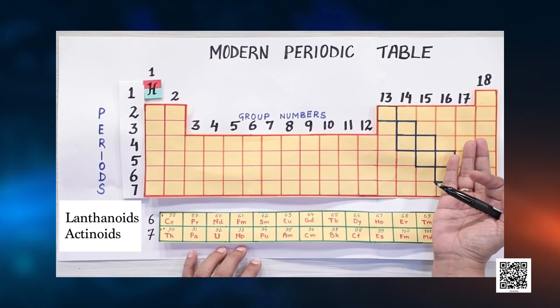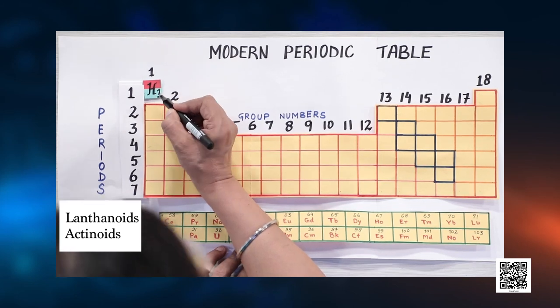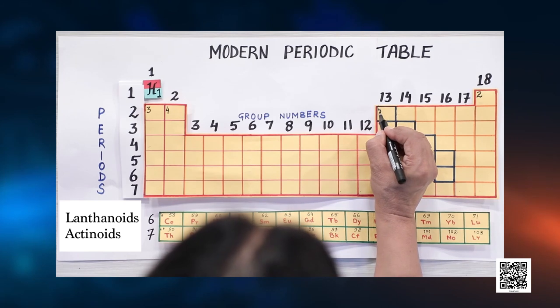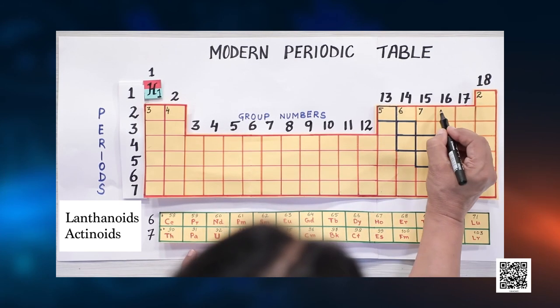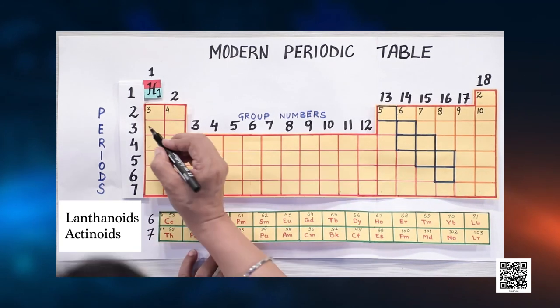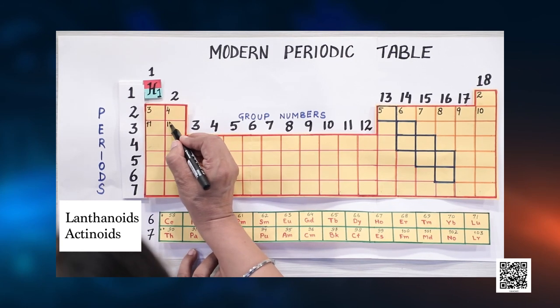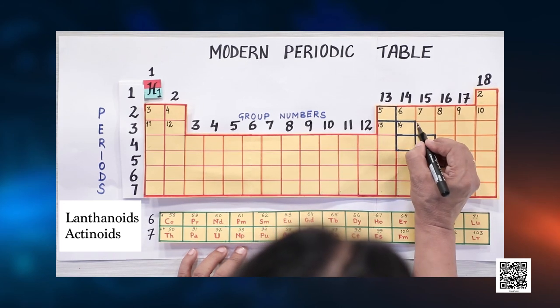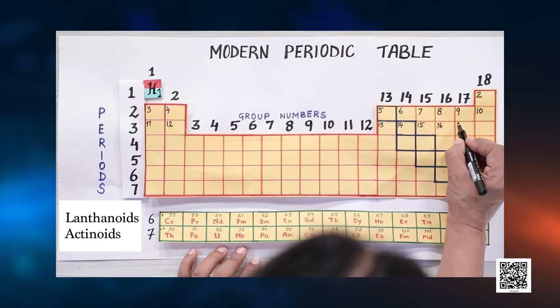Now let's start numbering the boxes. This is box number 1, and here box number 2. In the second row I have boxes 3, 4, 5, 6, 7, 8, 9 and 10. Now let's start with the third row: box number 11 and 12. And then in the 13th column, box number 13, 14, 15, 16, 17, 18. In the fourth row we have box number 19 and 20. We will be discussing in detail up to 20, but you may fill the others too.